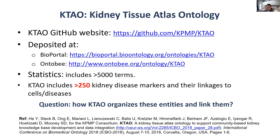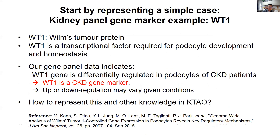I'd like to focus on one aspect to illustrate how KTAO works. Initially, we got an Excel file of more than 250 kidney disease gene markers and how they are related to cells and diseases. We would like to answer one question: how can KTAO organize these terms — genes, markers — and bring them together? Let's start with a simple example: WT1.